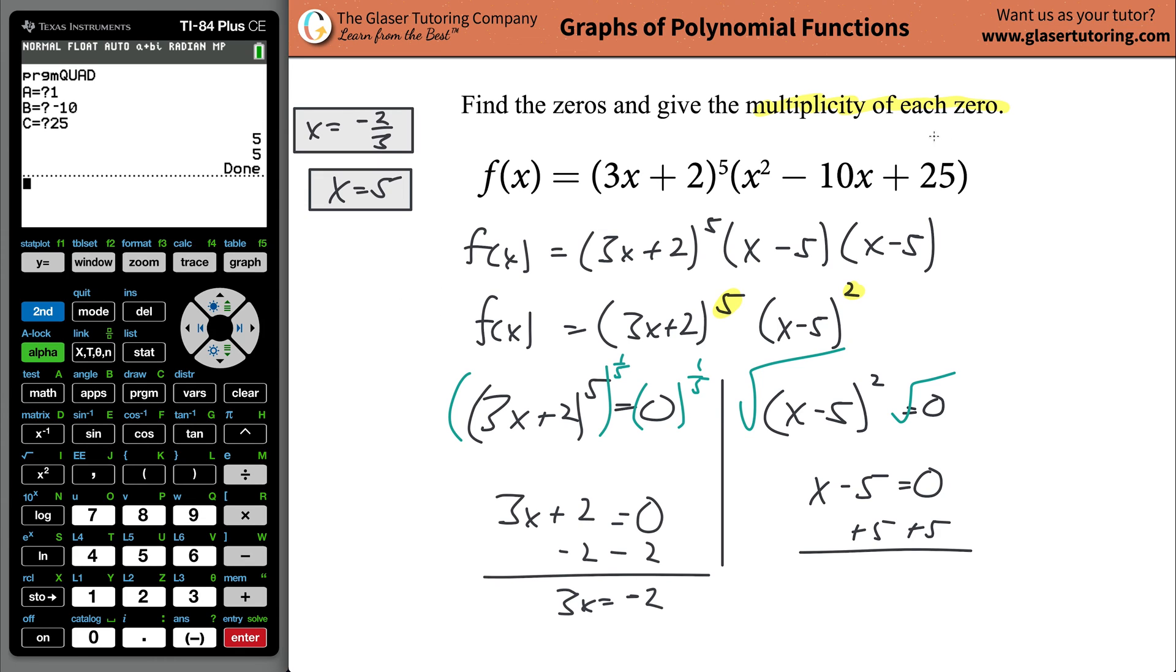Now to give the multiplicity of each, what you can do is you can now look to the values of the powers, as I was mentioning before. So the zero here, the first zero, x is equal to negative two thirds, has a multiplicity of five, it's equal to the power. And then x to the fifth arose from this factor. So x was equal to five. And for that zero value, the multiplicity was going to be two. And that's it. Those would be your answers.